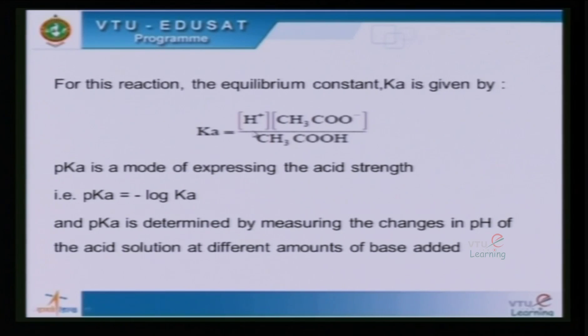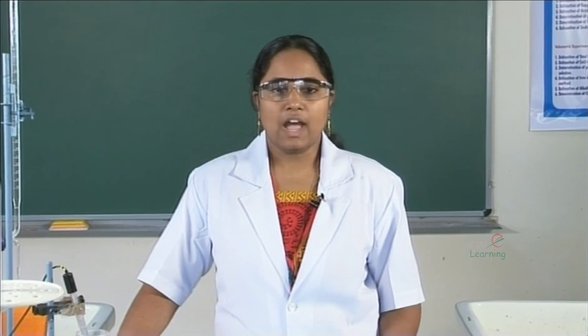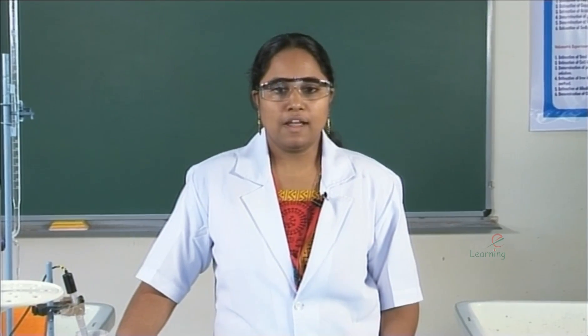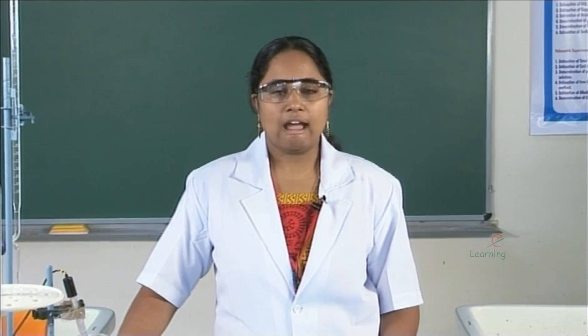pKa is a mode of expressing the acid strength. Its mathematical relation is pKa = −log(Ka). pKa is determined by measuring the changes in pH of the acid solution at different amounts of base added.